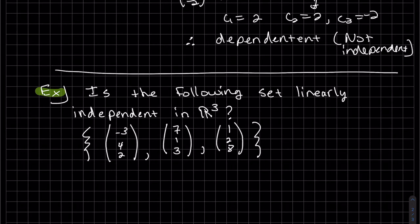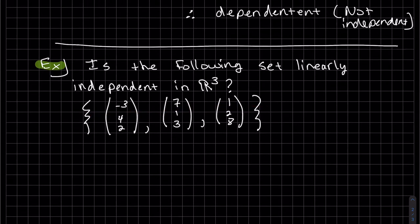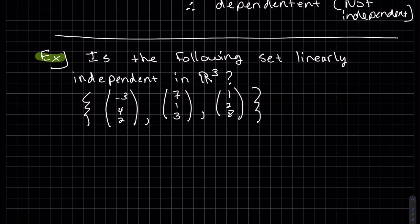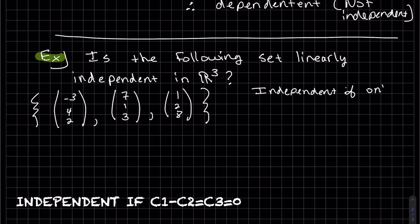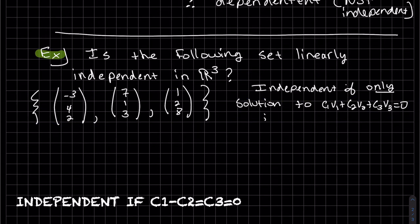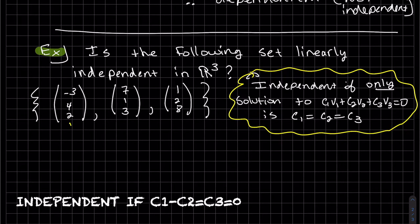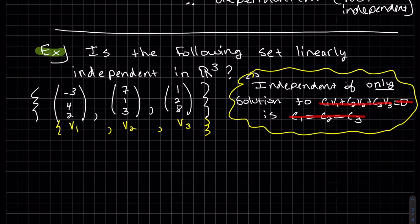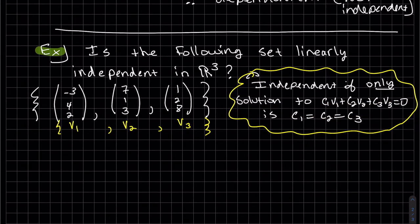So is this set independent in R3? So just to remind us. Okay, so if we set this up, again, this is my V1, this is my V2, this is my V3. And we can write this as a linear combination and set it equal to zero and solve that system. And if the only solution is zero, then yes, it's linearly independent. So let's do this.